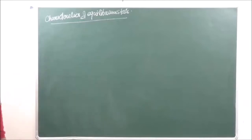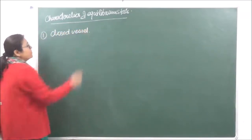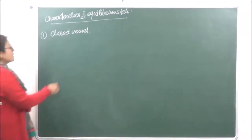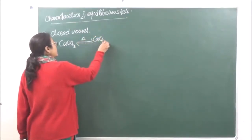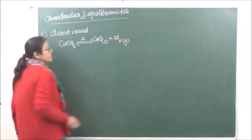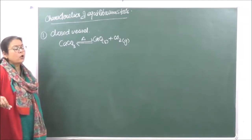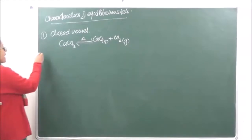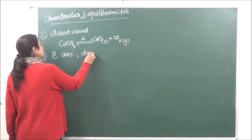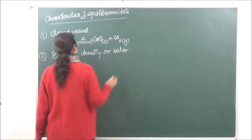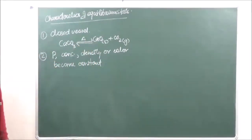Let's move on to the characteristics of equilibrium state. The first characteristic is that equilibrium can only be obtained in a closed vessel or a closed system. For example, if you are decomposing calcium carbonate and not using a closed system, the carbon dioxide will escape as a gas and hence the reverse reaction won't be possible. So equilibrium can always be attained only in a closed vessel.